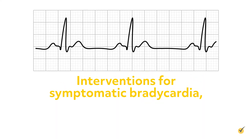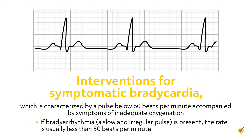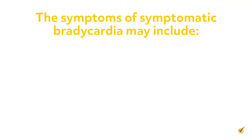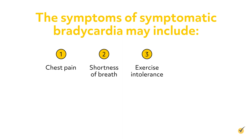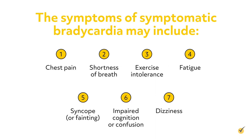Finally, let's look at interventions for symptomatic bradycardia, which is characterized by a pulse below 60 beats per minute accompanied by symptoms of inadequate oxygenation. If bradyarrhythmia of slow and irregular pulse is present, the rate is usually less than 50 beats per minute. Symptoms may include chest pain, shortness of breath, exercise intolerance, fatigue, syncope or fainting, impaired cognition or confusion, and dizziness.